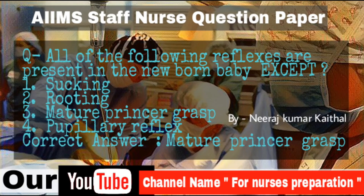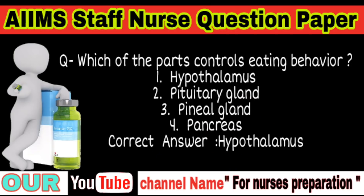Friends, don't get bored — this is a long video but the exam paper is also long with 100 questions. Work hard, sit and concentrate; take a break and restart if needed. Question: Which part of the brain controls eating behavior? Options: Hypothalamus, pituitary gland, pineal gland, pancreas. The correct answer is hypothalamus.